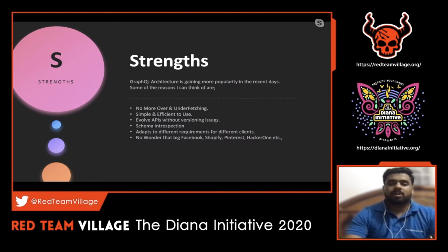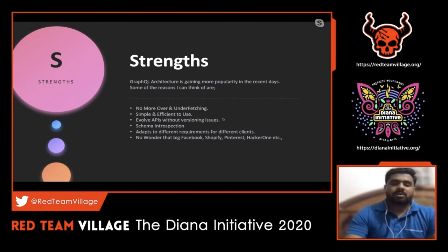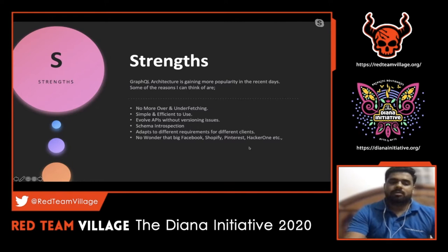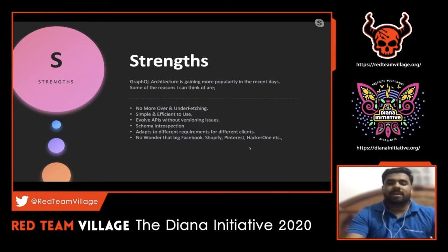With REST APIs, developers increment endpoint versions like v2, v3, v4. Maintaining that versioning is tedious, but with GraphQL it is pretty easy. Schema introspection is another important feature - we can interact with the schema using the SDL to pull out certain information. Companies like Facebook, Shopify, Pinterest, and HackerOne use GraphQL because it has far more features and functionality than REST APIs.